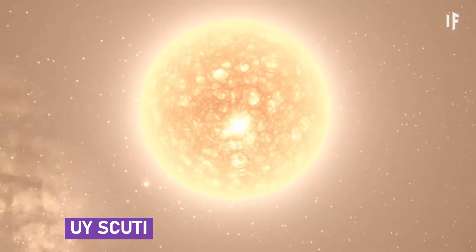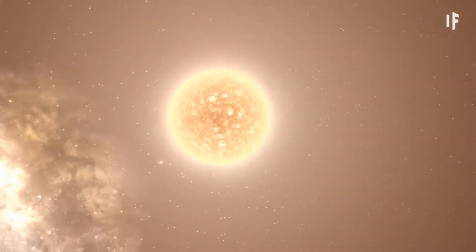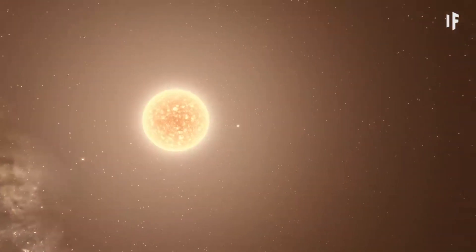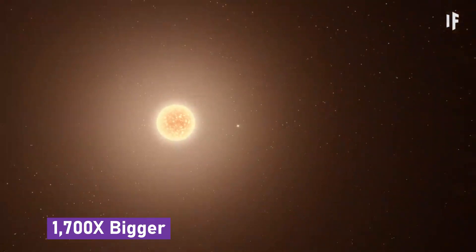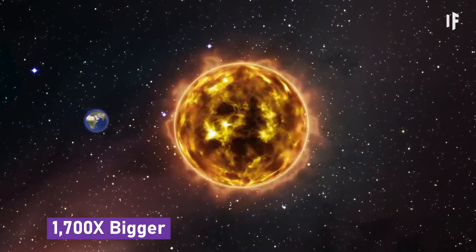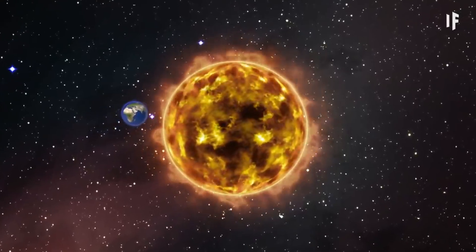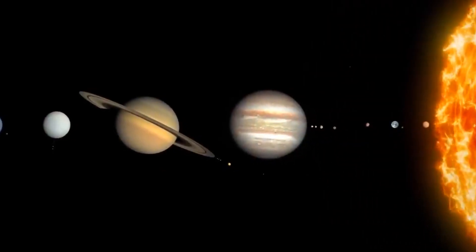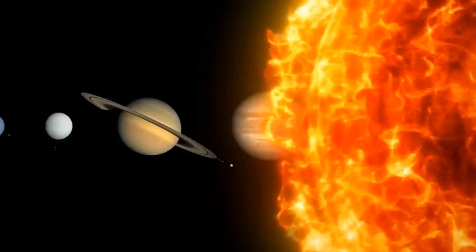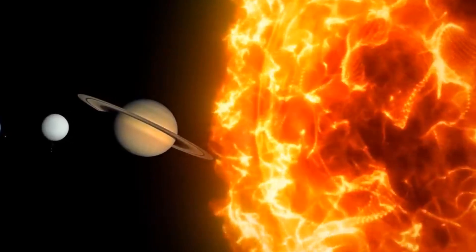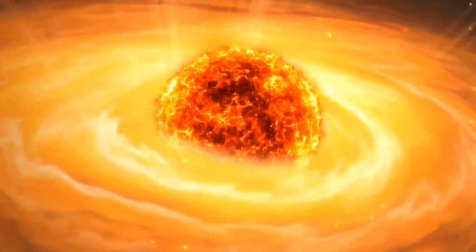UY Scuti is the name of the most prominent star that we are aware of. The radius of this hypergiant is approximately 1,700 times bigger than our Sun. If you were to somehow maneuver UY Scuti into the center of our solar system, its rim would extend well beyond the orbit of Jupiter.